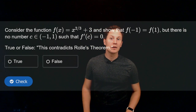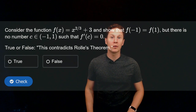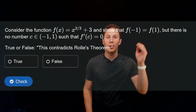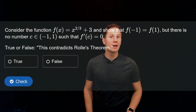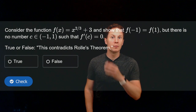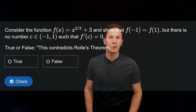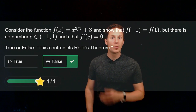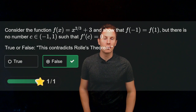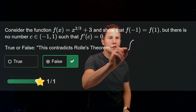Let's look at the next question. Consider the function f(x) = x^(2/3) + 3, and show that the endpoint values on the closed interval [−1, 1] are the same, but there is no number c between −1 and 1 such that f'(c) = 0. Is it true or false that this contradicts Rolle's theorem? I hope you paused, and I find that this does not contradict Rolle's theorem.